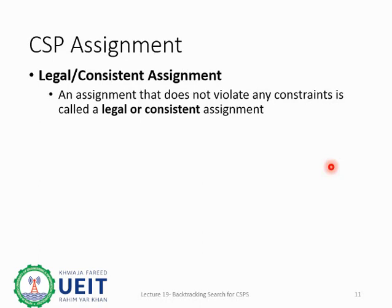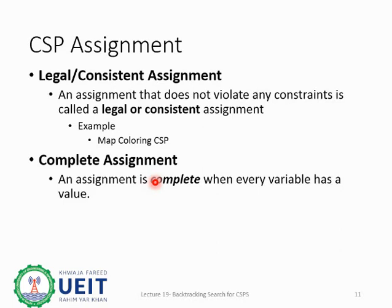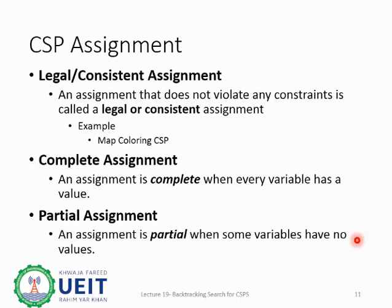The second type is complete assignment. An assignment is complete when all variables in the problem are assigned a domain value. Note that a complete assignment is not always a consistent assignment. For example, if all variables in the map coloring problem were assigned red, the assignment would be complete but not consistent, as it violates the rules. The third type is partial assignment — it only assigns values to some variables while others are left with no values.